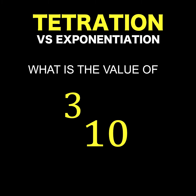Hey everyone, here's our math problem for today. Do you know how to find the value of this weird-looking math notation? Normally, when we have an exponent, we write it as the base, and the exponent is a small number written at the upper right-hand corner of the base. But here, we have a base, and the number 3 is written at the upper left-hand corner.